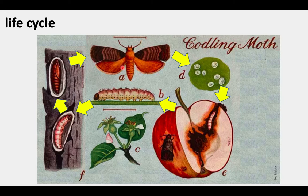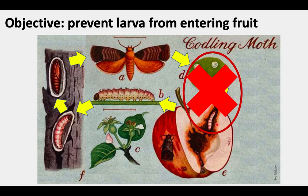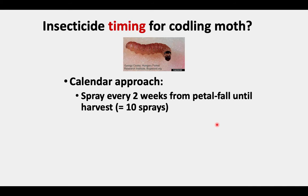Our objective in apple pest management is to prevent that larva from entering the fruit. So the stage we really want to concentrate on is where we block those young larvae from entering the fruit. When we're using insecticide, the big question is timing. What is the best timing for codling moth?